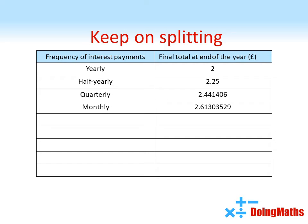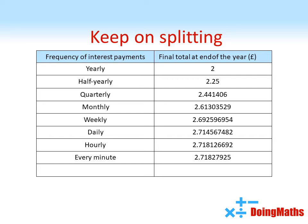If you had twelve monthly interest payments, you'd get just over two pound sixty one. If we did it weekly, you'd get slightly more than two pound sixty nine. Daily: two pound seventy one. Look what happens now — if we split it hourly, our number still starts two point seven one, it's getting a little bit bigger. If it was every minute: two point seven one eight. Every second is still two point seven one eight. So you can see that this number is converging to a number beginning two point seven one eight two.